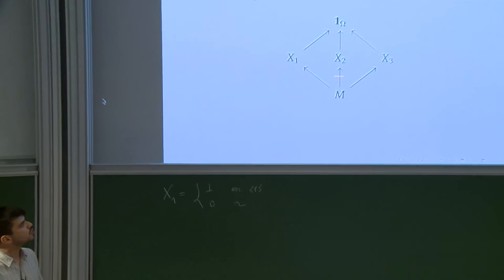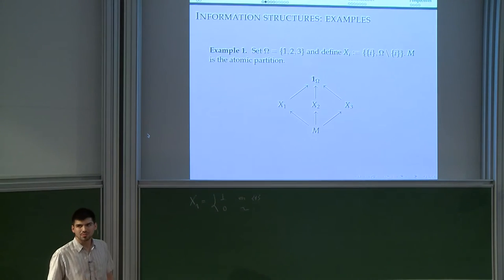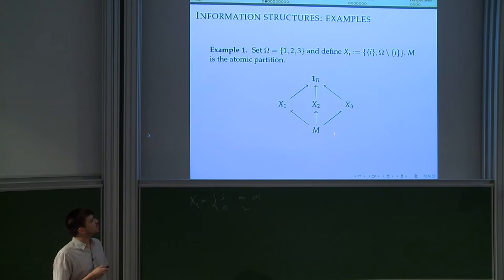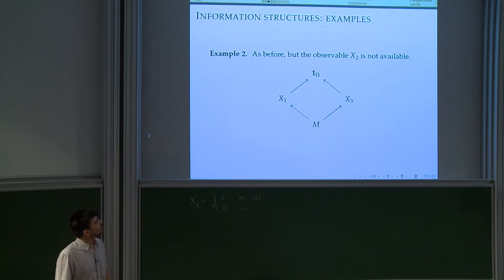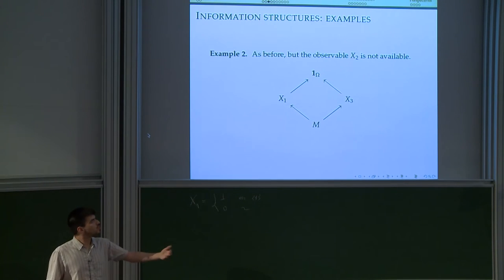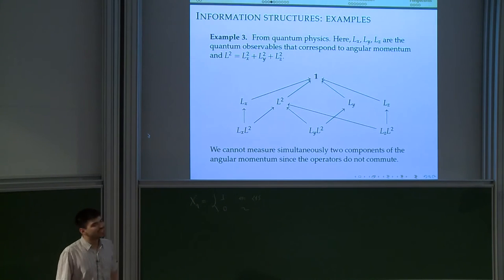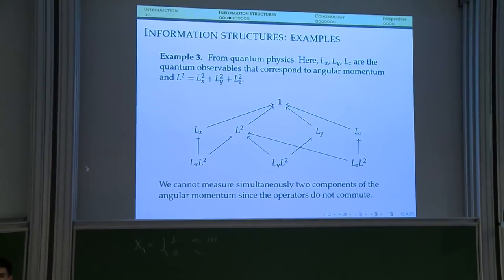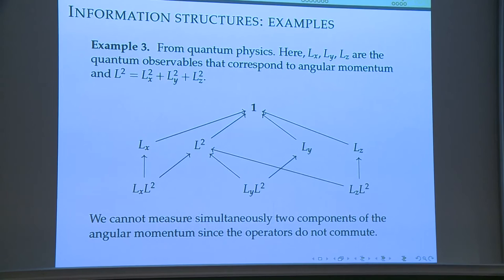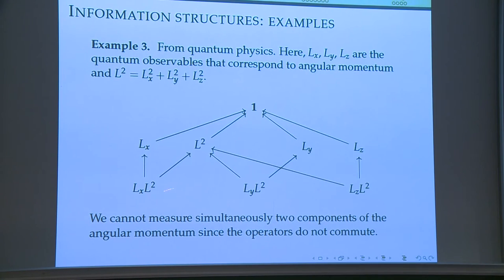So here we have three partitions: the partition that distinguishes point one, the partition that distinguishes point two, and the partition that distinguishes point three. Below is the atomic partition — a simple but easy-to-understand example. You could also remove one observable; for example, maybe you are not able to perform observation X2. A physical example: in quantum mechanics, you take observables related to angular momentum L. You cannot measure two of those at the same time because they do not commute, but there is a fourth observable compatible with Lx, Ly, and Lz. At the end, you can organize in a graph the different refinement relations between your observables.